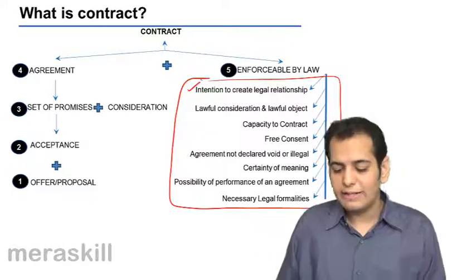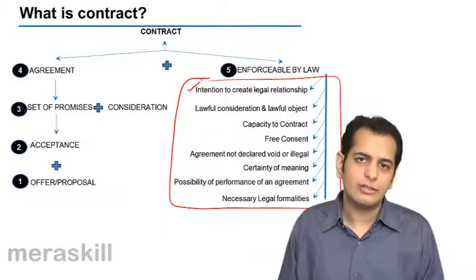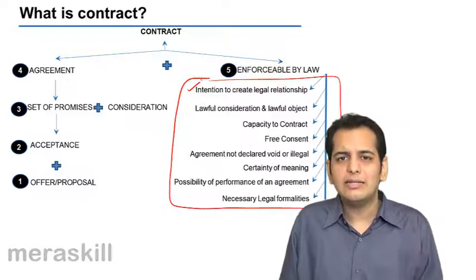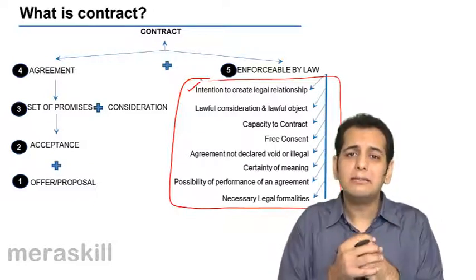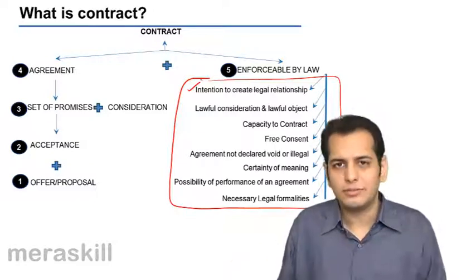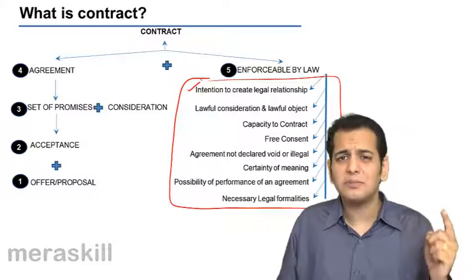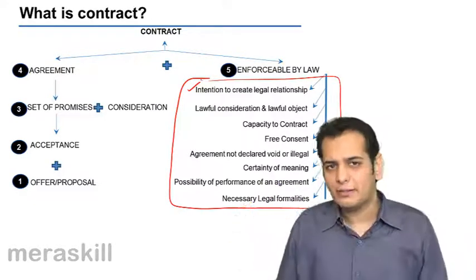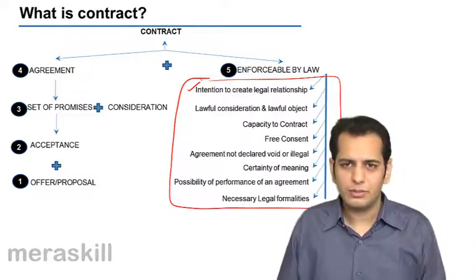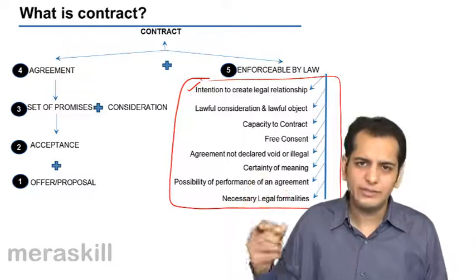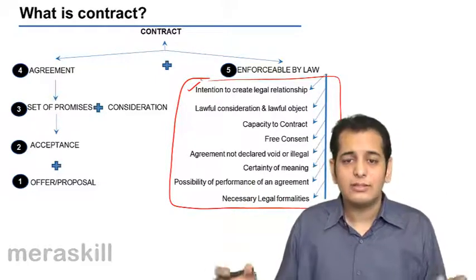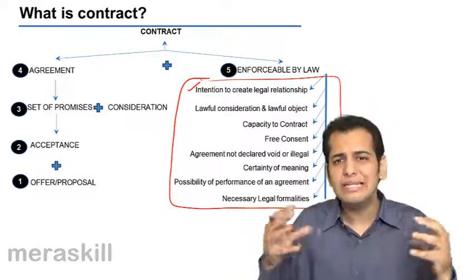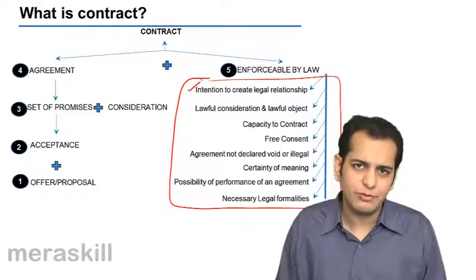The first thing is intention to create a legal relationship. Legal relationship means legally binding each other. When one person says to another that he will sell his bike to him for Rs. 20,000 and the other person agrees, they both legally bind each other. They both get into a legal relationship with each other.